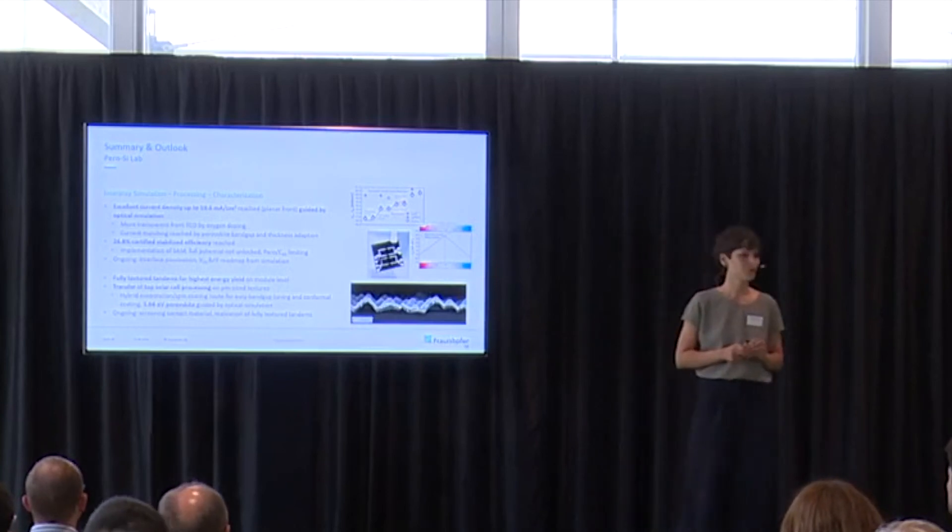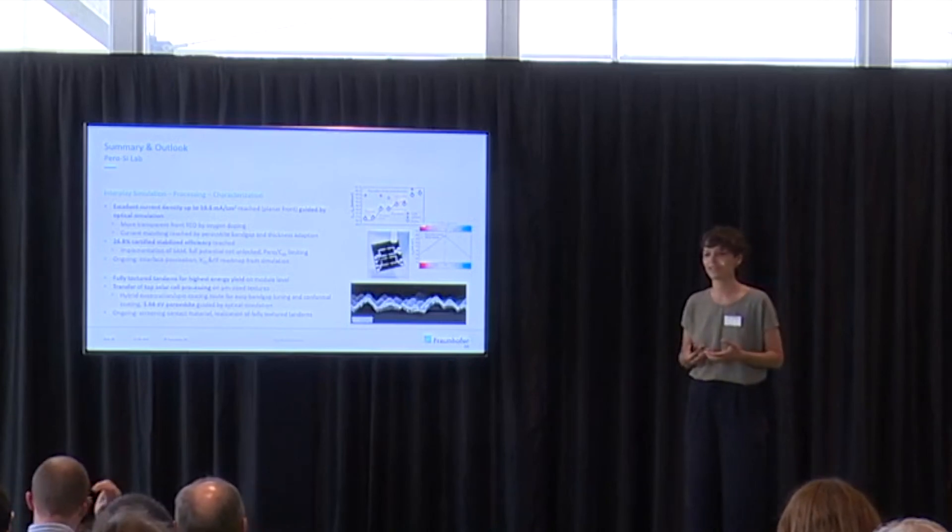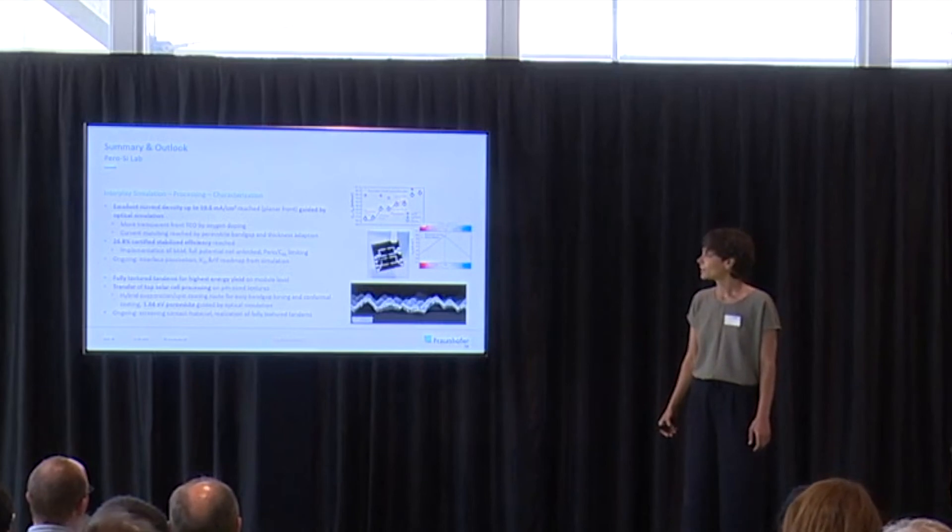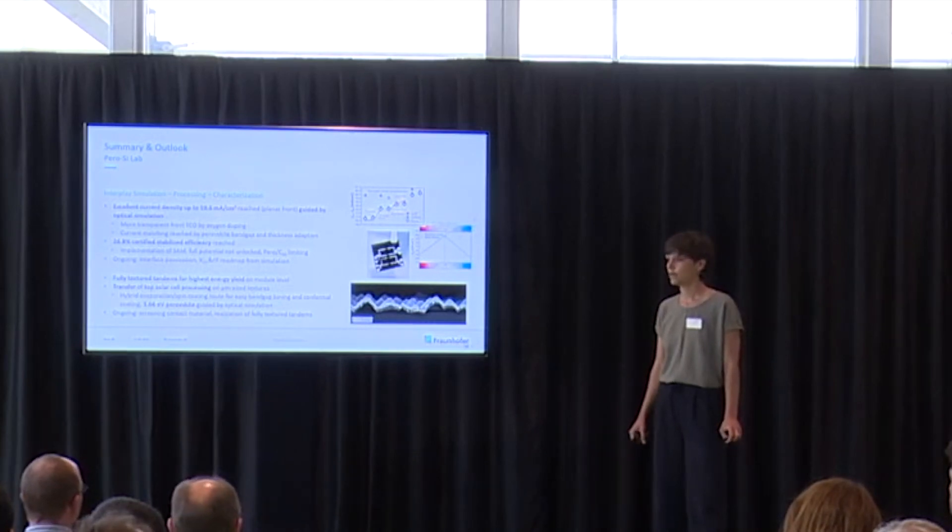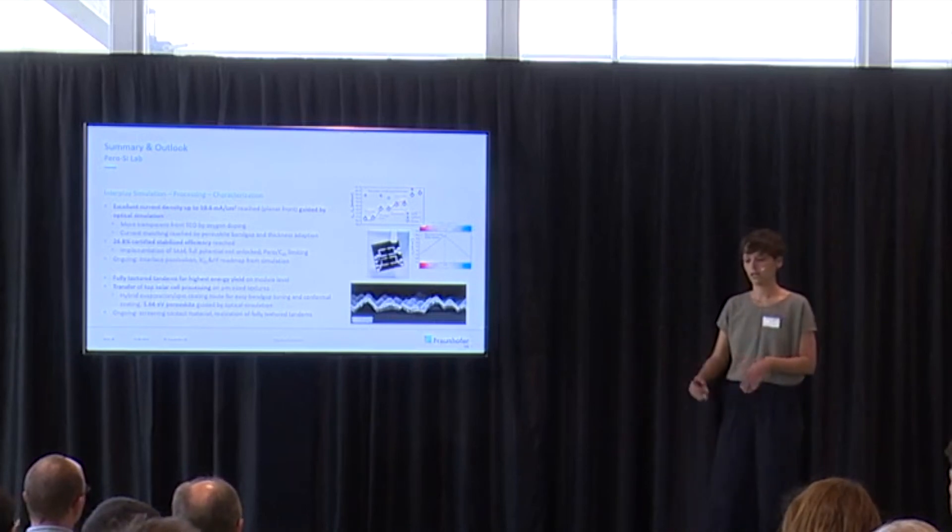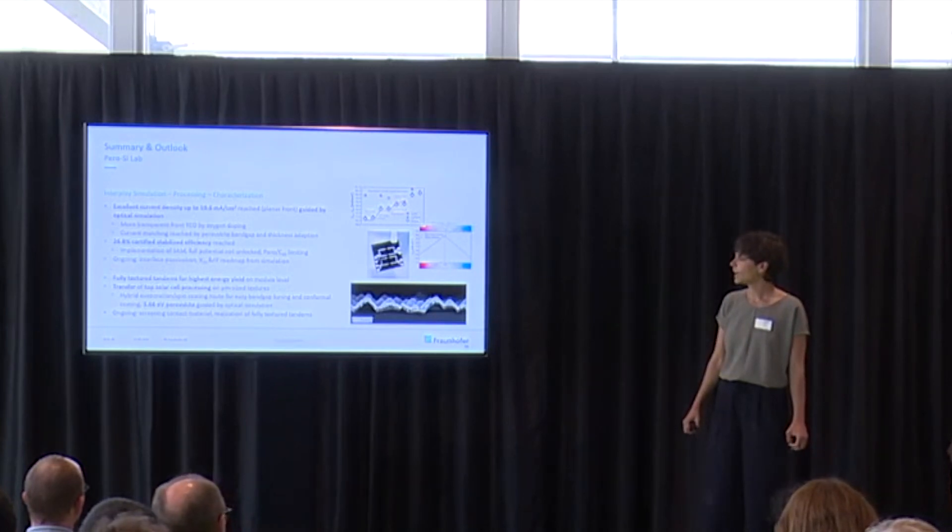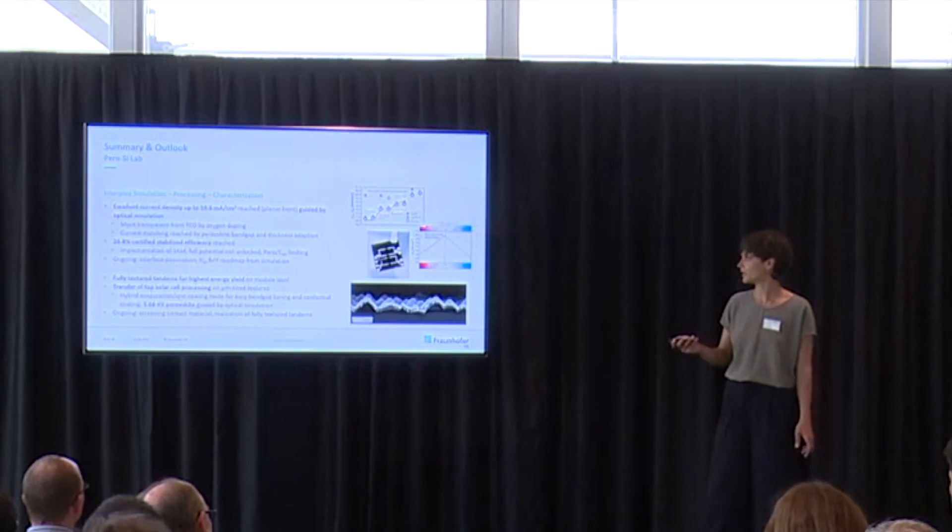With this, I'd just like to summarize and to motivate how important and nice it can be to bring simulation, processing, and characterization together. I think this is the only way how it works. We usually need to do several iterations to really proceed. With this, we could reach this 19.6 milliamps per square centimeter with a planar front. Also this 26.8% certified efficiency. We know now where our limitation is at. Of course we're now working on it and trying to improve also our simulation in the full optoelectrical model to give us some new hints and guidelines and insights. Further, I showed you some results of fully textured tandem roadmap and how the modeling can help to give the guidelines for the processing.